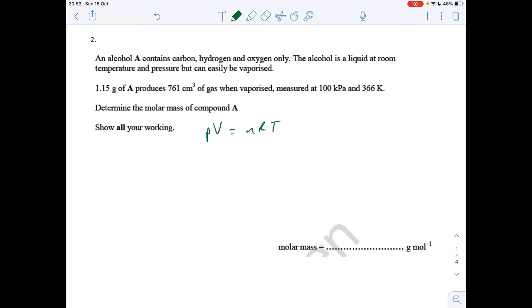This rearranges to n equals PV over RT. We've got to know our units for the ideal gas. Pressure has got to be in pascals, so they've given us it in kilopascals, that's 100,000 pascals, times the volume.